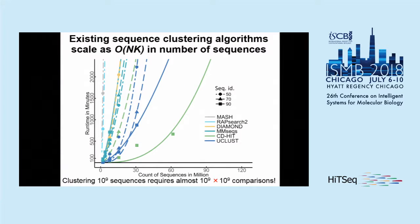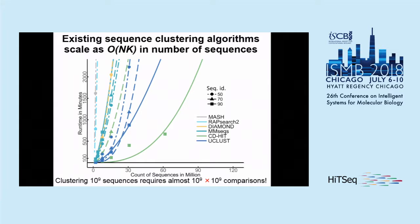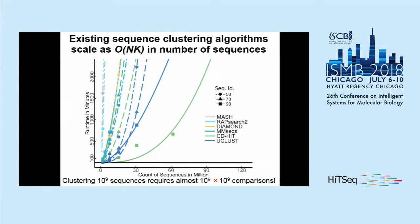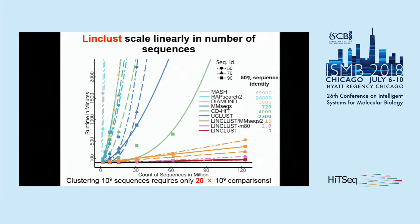We wanted to verify this, so we benchmarked the tools at different sequence identity thresholds. The x-axis shows the count of sequences clustered, and the y-axis shows the runtime each tool needed. Every tool shows some kind of quadratic curve. So we designed an algorithm that, instead of being quadratic, can do the same thing in linear time — requiring only 20 times n comparisons.